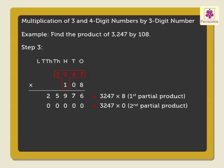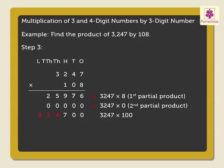Now, multiply 3,247 by the hundreds digit of 108, that is 1. As the digit 1 is in the hundreds place of the multiplier, we are actually multiplying 3,247 by 100. So we write a 0 below the digits 0 and 0 of the second partial product. Now, 7 into 1 is equal to 7. 4 into 1 is equal to 4. 2 into 1 is equal to 2. 3 into 1 is equal to 3. So we get 3,24,700 as the third partial product.